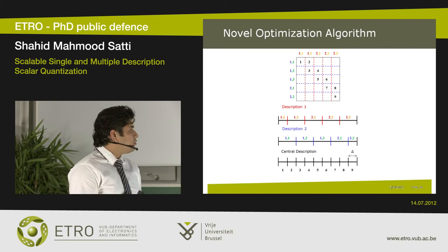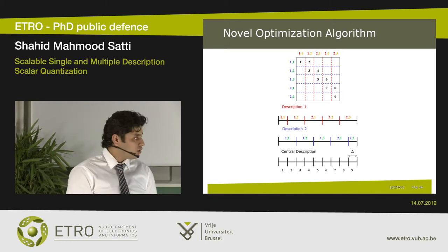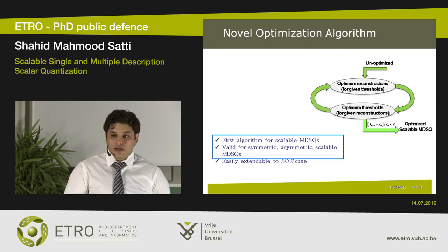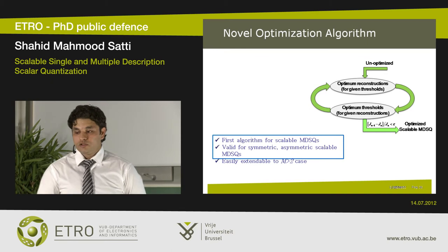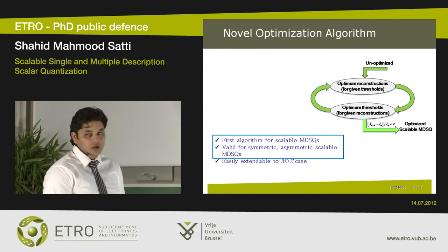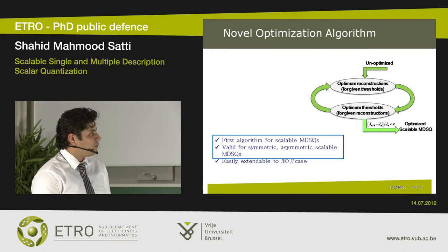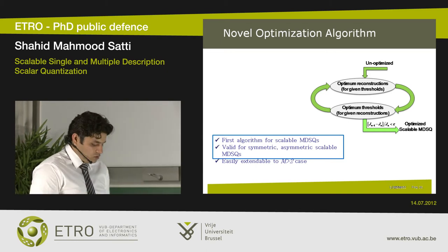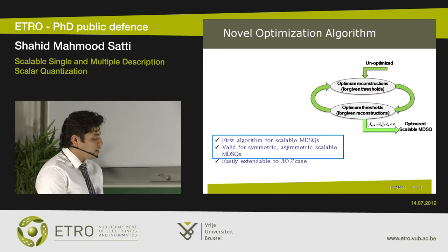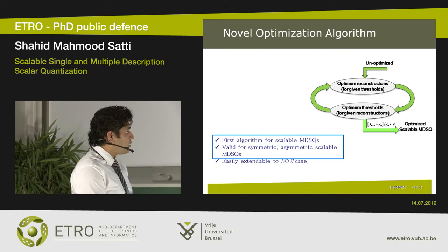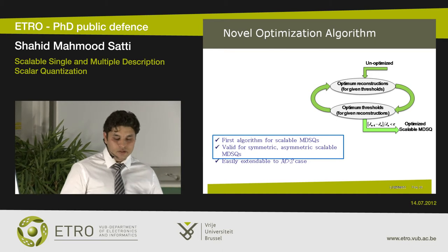Our proposed framework is quite generic in that it can handle both symmetric and asymmetric scalable MDSQs, and can be easily extended to more than two descriptions. In essence, the optimization framework has two functions: the first creates optimal reconstruction values for given thresholds, while the second gives optimal thresholds for given reconstruction values. Starting from some initial condition, we iterate between these two functions with an intelligent exit strategy to obtain optimal scalable MDSQs. This is an extension of the commonly known Lloyd-Max algorithm used for optimizing scalar quantizers, but here it is more challenging because we have three quantizers, each with multiple embedded levels, which must all be optimized jointly.